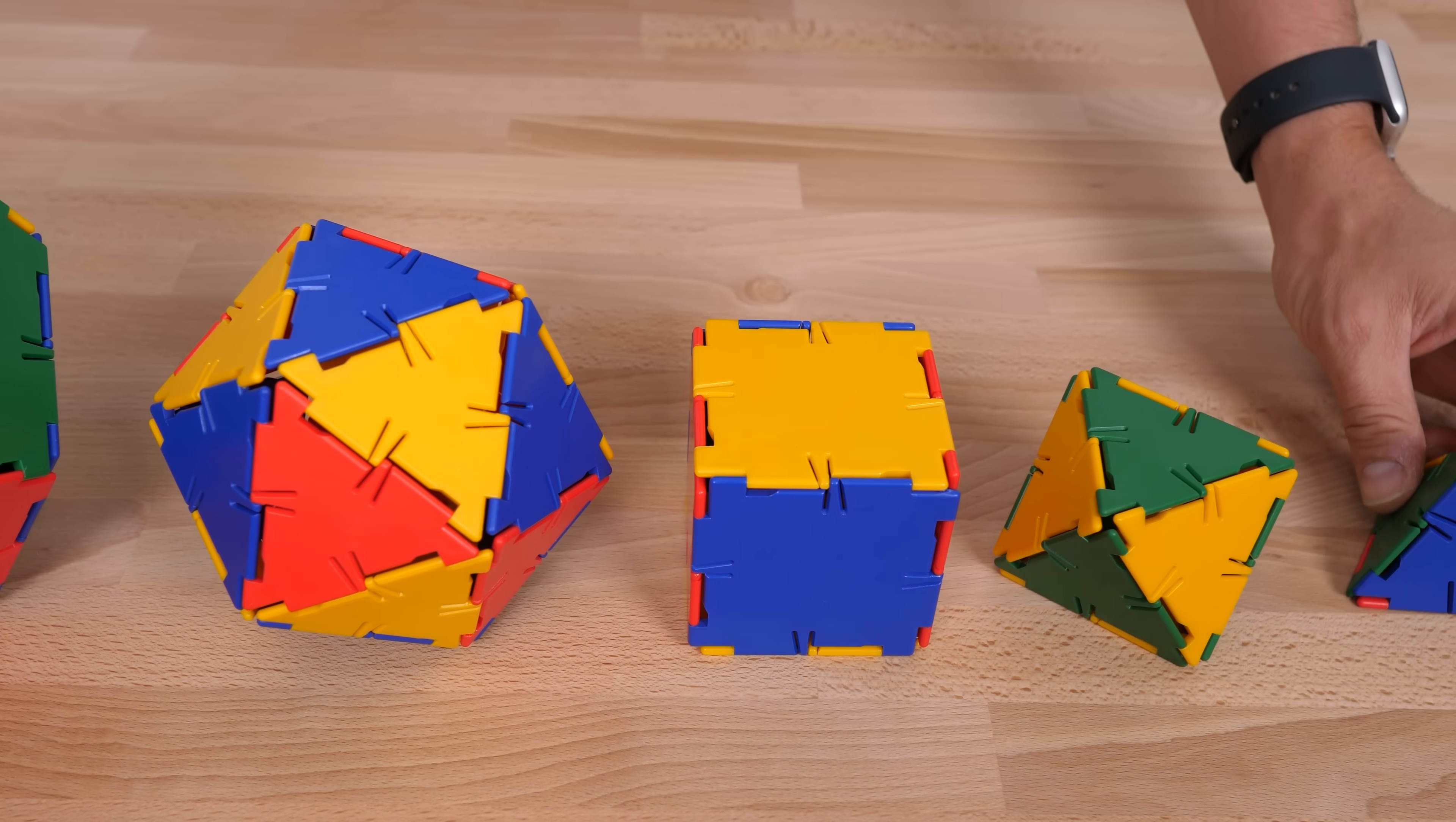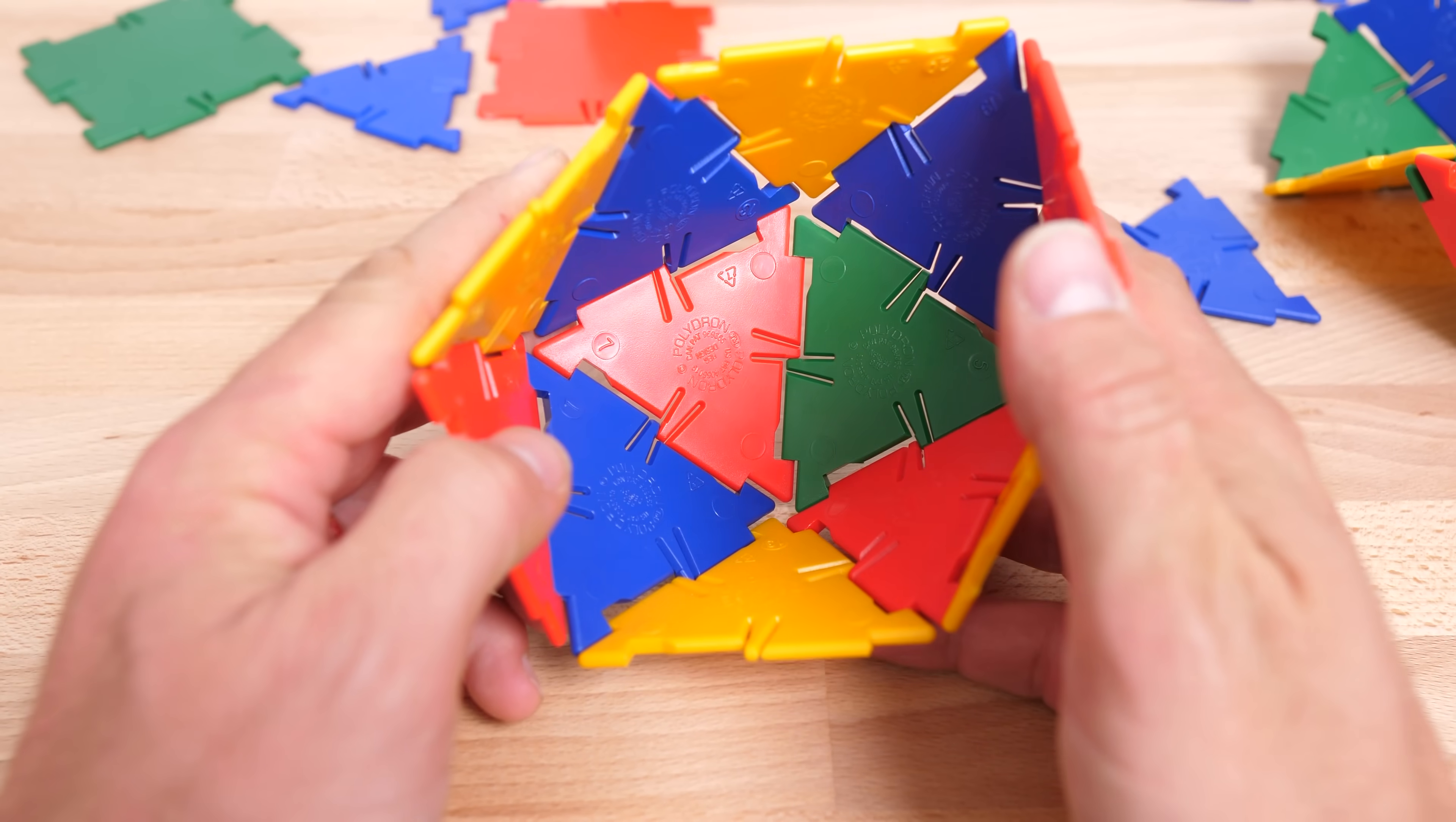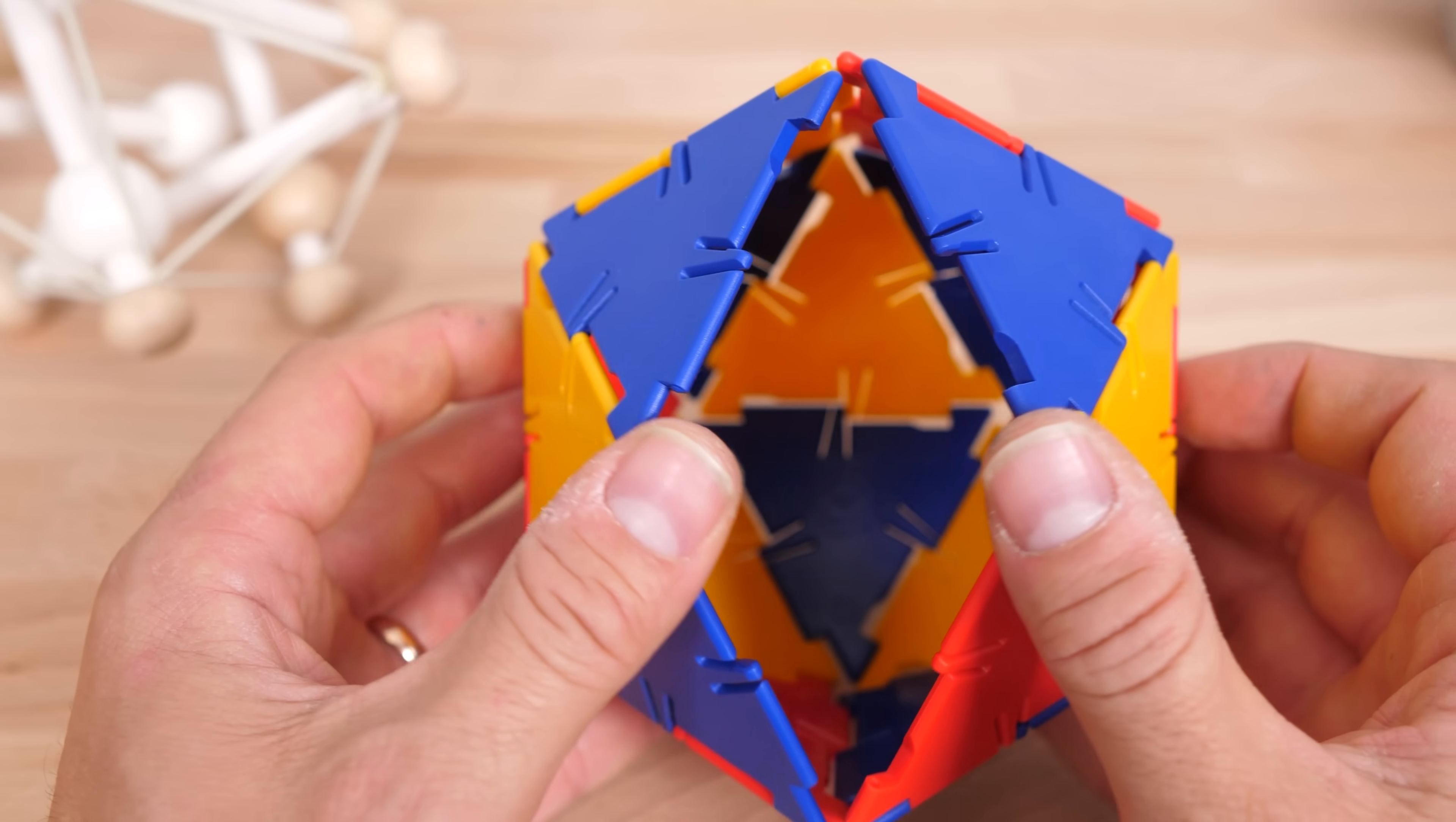These are kids' toys, but whenever I see something like this, I always think, well, I guess I'm building the platonic solids now. One thing I noticed, especially with the icosahedron, is that they're incredibly wobbly because of these hinges. Until you get quite close to the end.